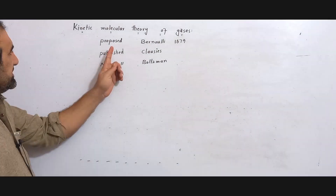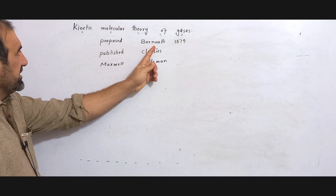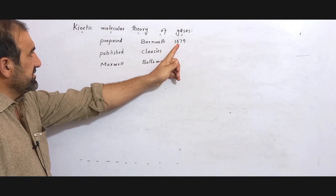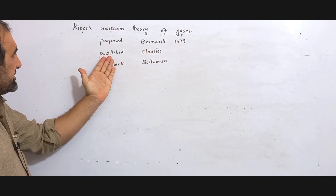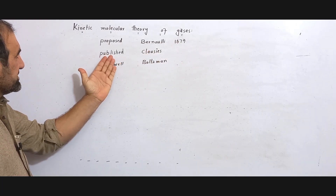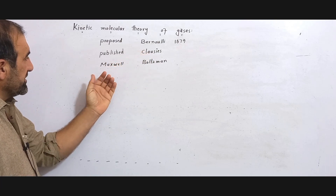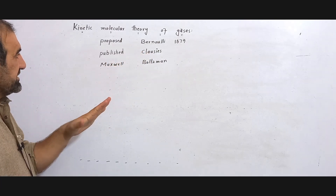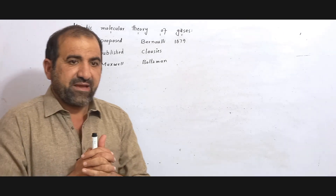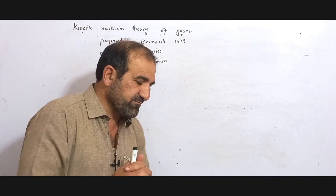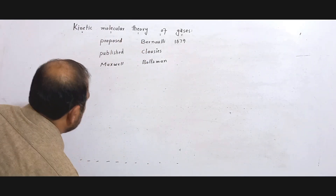This theory was first of all proposed by Daniel Bernoulli, and later on it was modified and published by Clausius, and after that it was further developed by Maxwell and Boltzmann. According to this theory, the important postulates are as follows.